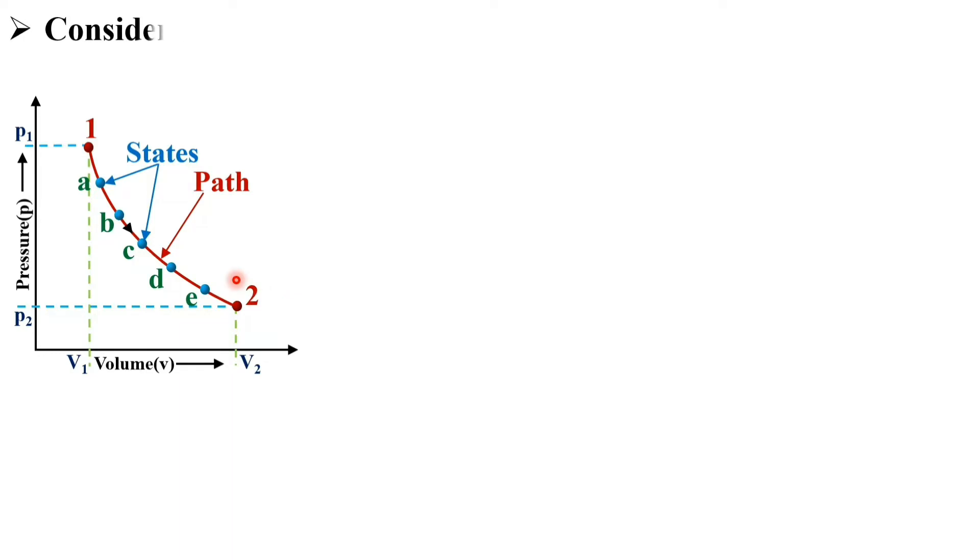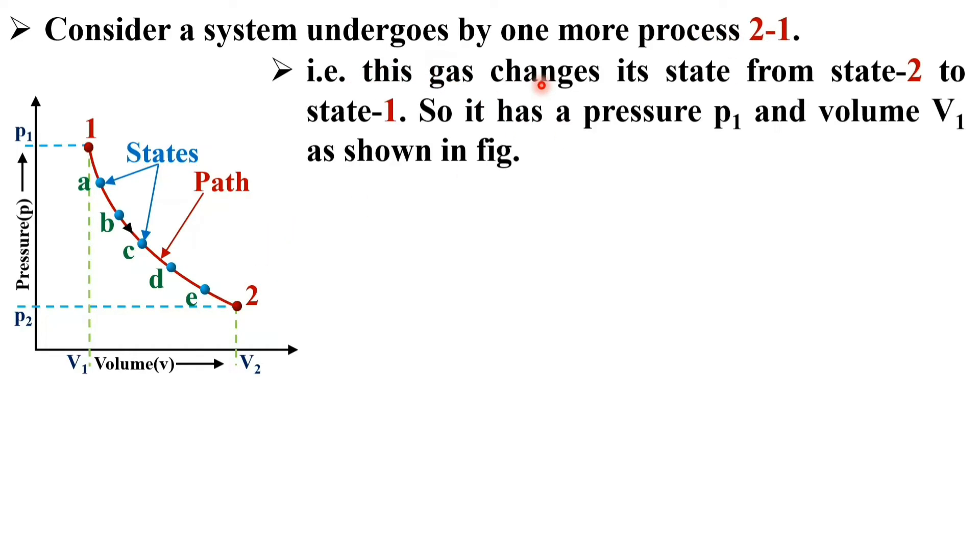Now, next, consider a system undergoes by one more process 2-1. This gas changes its state from state 2 to state 1. Once again, it has a pressure P1 and volume V1. Let me draw over here the another process 2-1.